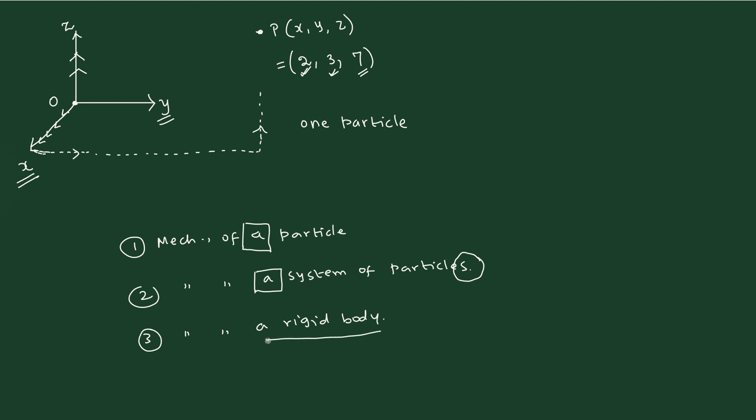When you are using the word rigid body, you bring the size into consideration. Now you say that a train is different from an airplane, an airplane is different from a cricket ball, and a cricket ball is different from a helicopter. Whereas, if you are going to study the mechanics of a particle, we say that everything is the same.